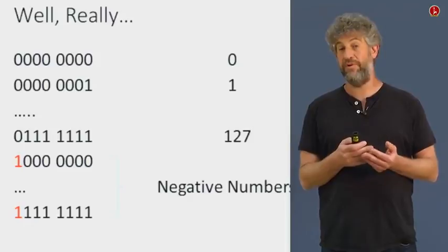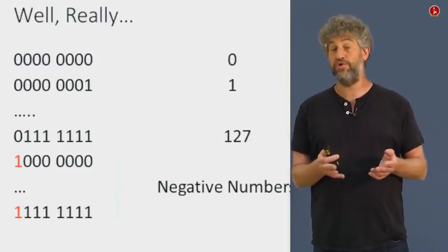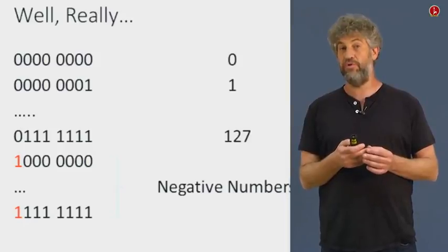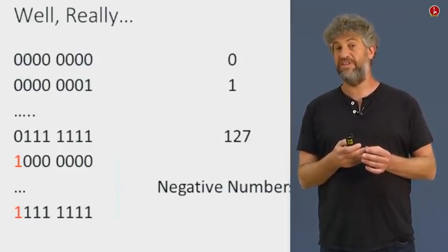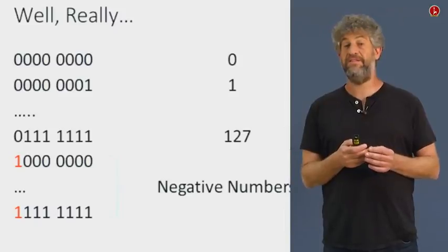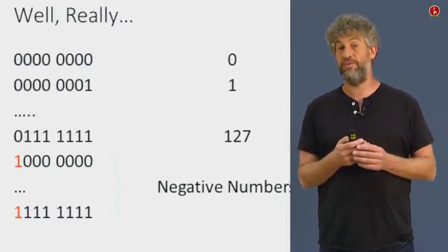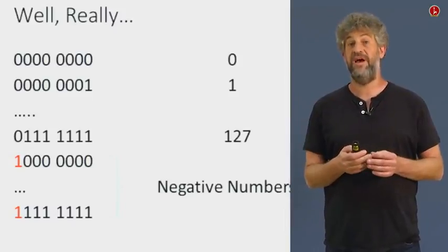But in general, half of the 256 possibilities are going to be reserved for negative numbers. And we're only going to be able to use the numbers between 0 and 127. These are the positive numbers that we're going to be able to use out of these 256 possibilities of 8 bits.